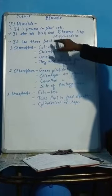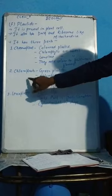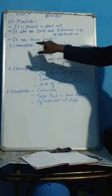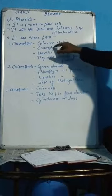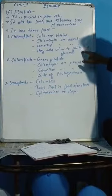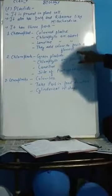We have seen different types of plastids: chromoplast, chloroplast, and leucoplast. Chroma means color. This is colored plastid that provides color. Chlorophyll is present and lamellae is present, and it provides color to fruits and flowers.